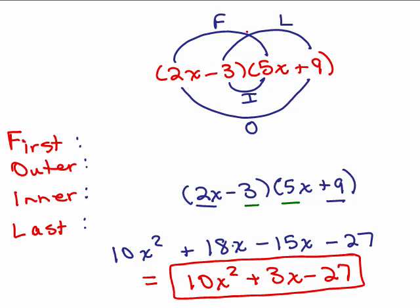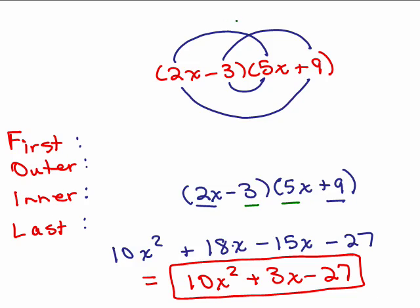Look at this FOIL diagram — does it kind of look like a smiley face? Let's take away the FOIL labels and you see the smiley face: there's the mouth and there's the bottom of the face. So if you make a smiley face you get all the right terms. For 2x minus 3 times 5x plus 9: 2x times 5x is 10x squared, and these two arcs multiplied together give negative 27.